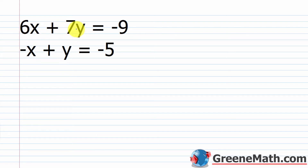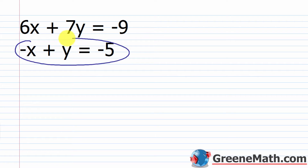Let's say we have this problem: 6x plus 7y equals negative 9, and negative x plus y equals negative 5. I can solve one of the equations for one of the variables. It doesn't matter which variable you pick, but it's generally easier to look for a variable with a coefficient of 1 — that's the easiest — or negative 1 as the second easiest.